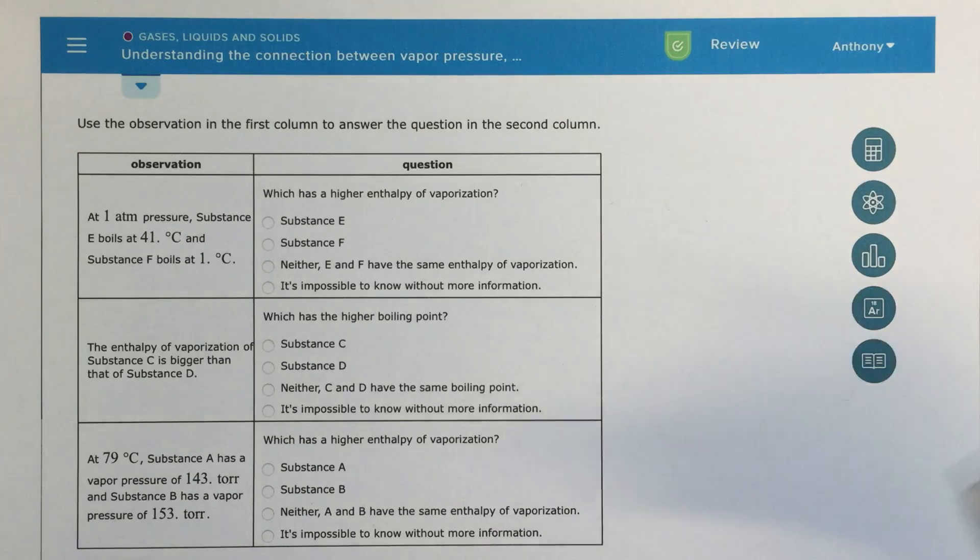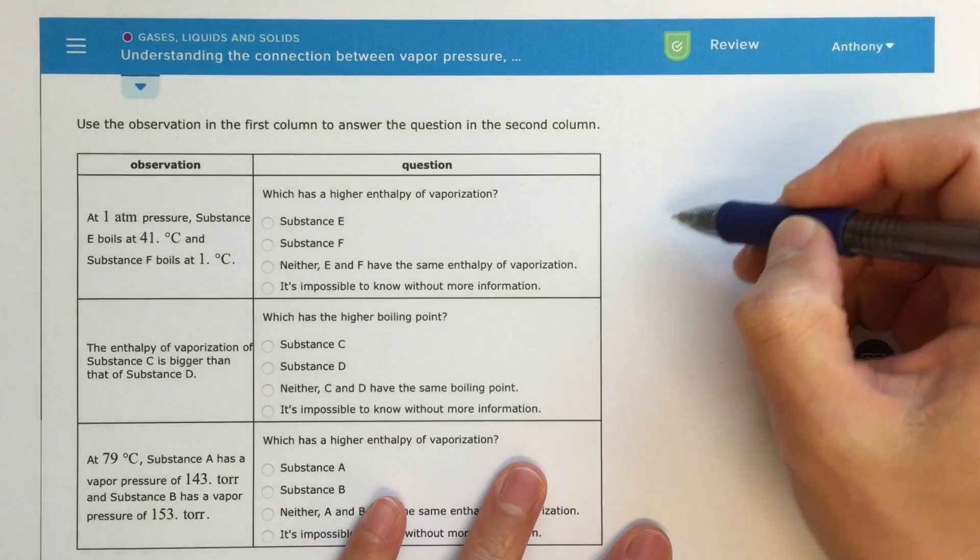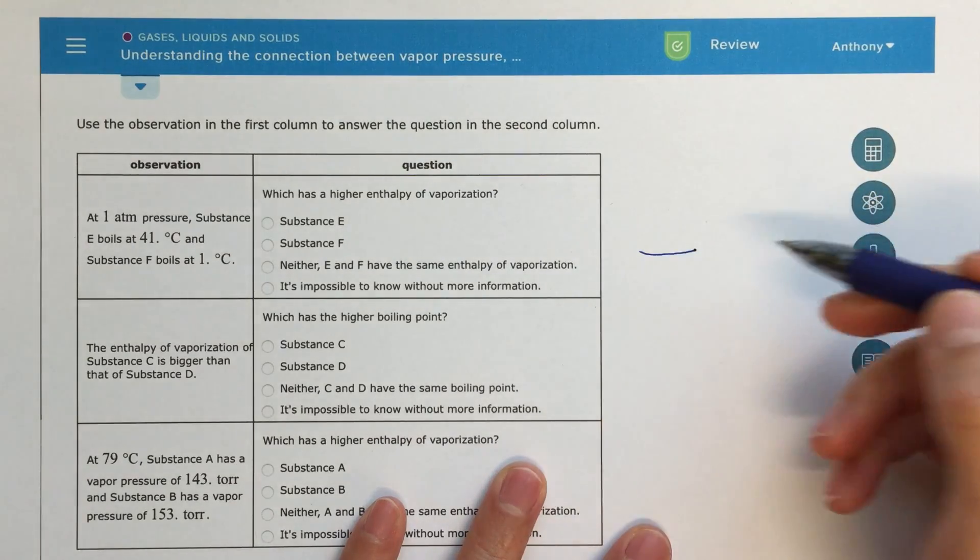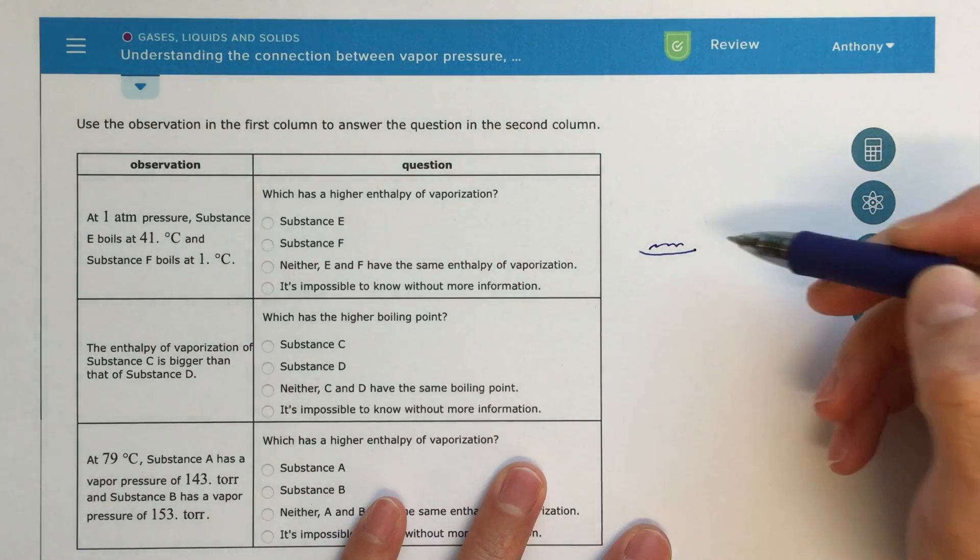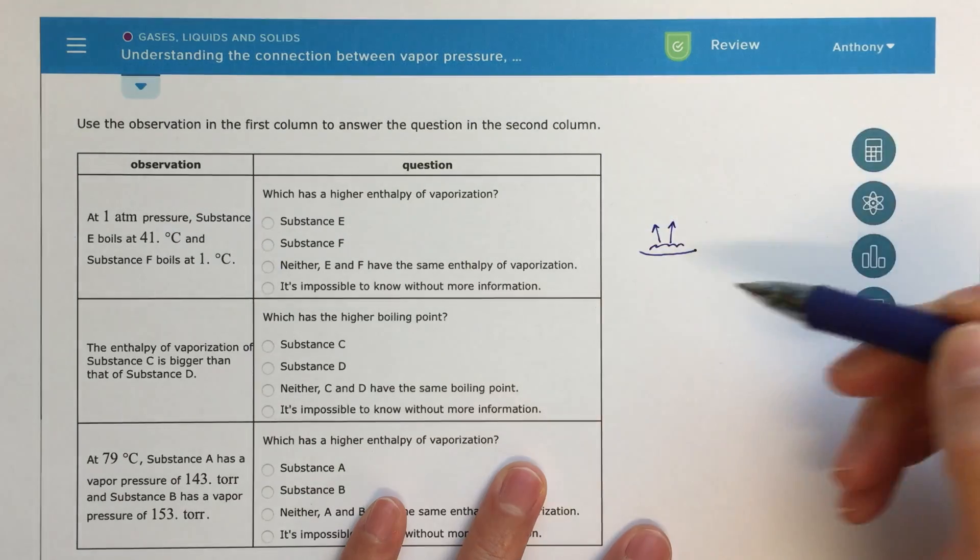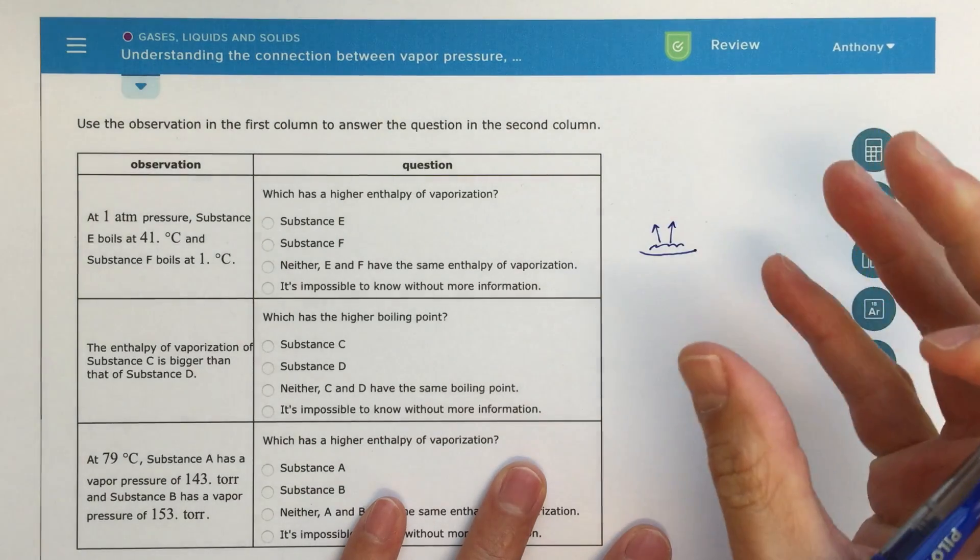So let's just talk about those really quickly before we get into the problem. When I think about vapor pressure, the way that I like to think about vapor pressure is if I have a watch glass and I've got my liquid on top of that watch glass, the vapor pressure is going to be sort of how quickly that liquid evaporates.